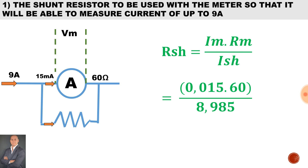I_m is 0.015 A and the resistance of the meter is 60 ohms. I shunt gives us 8.985 amps flowing through the shunt winding and the remaining current flowing through the meter. Therefore the value of the shunt resistor is 0.1 ohms.